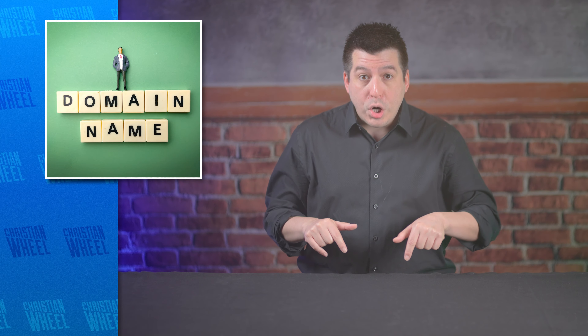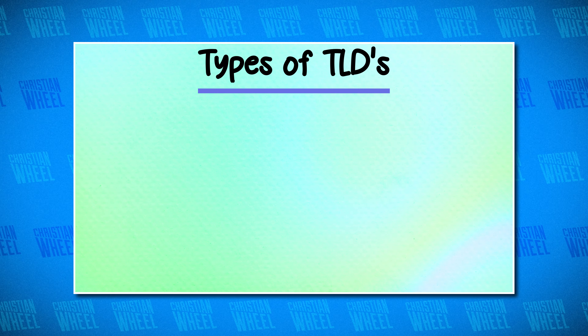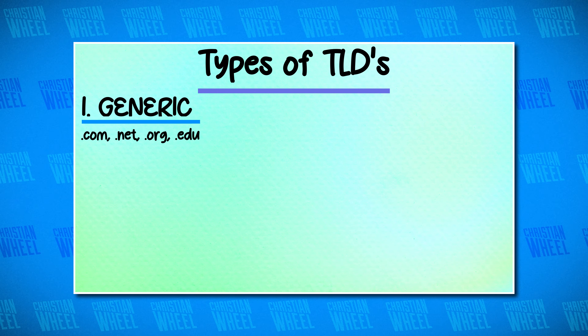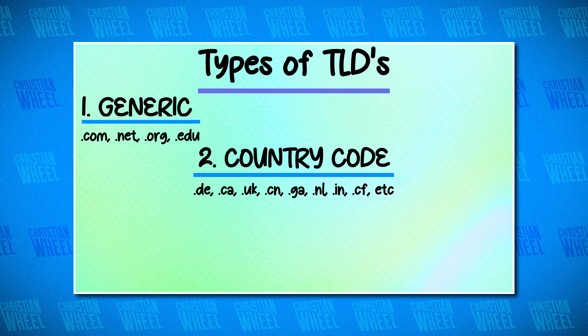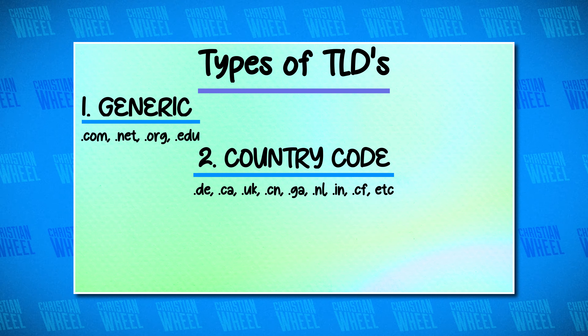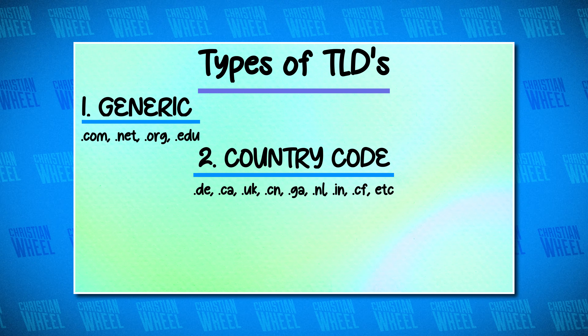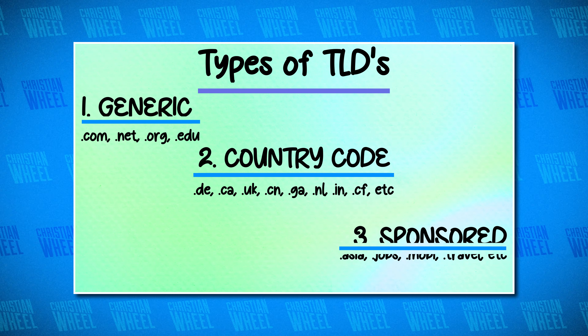We are here to talk about the top-level domain itself. There are three kinds of TLDs: generic top-level domains like .com, .net, .org — these are the original gangsters of top-level domains. Then there are country code TLDs like .uk, .us, .eu, and others. And finally, there are the new kids in town: sponsored top-level domains.